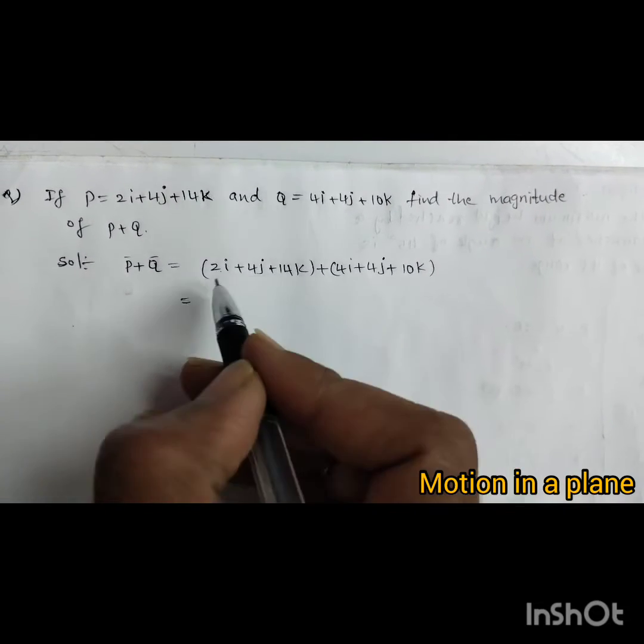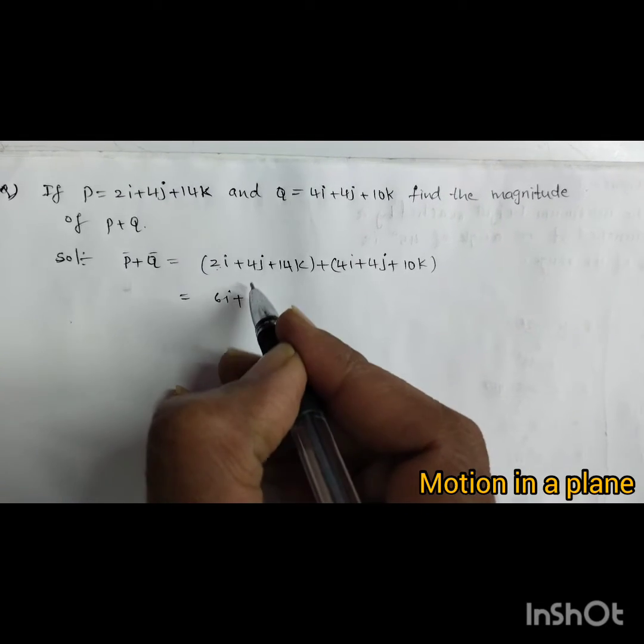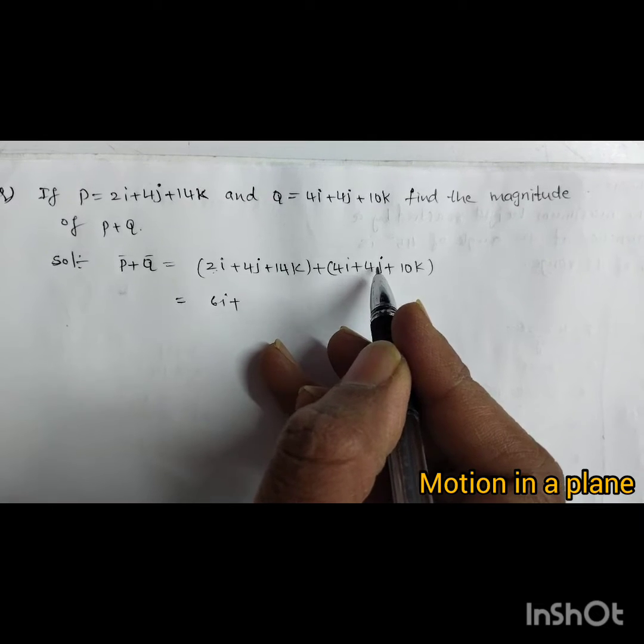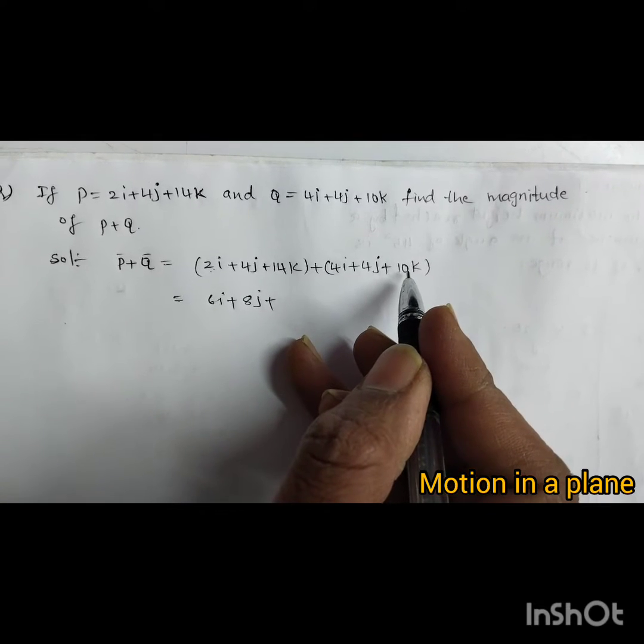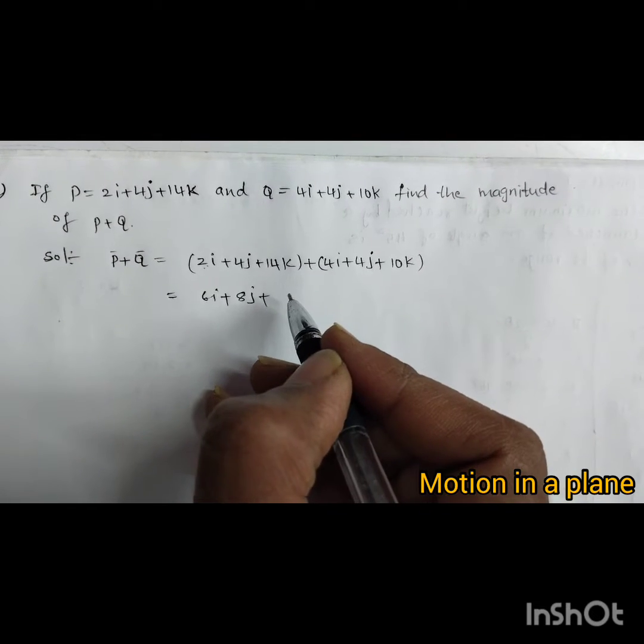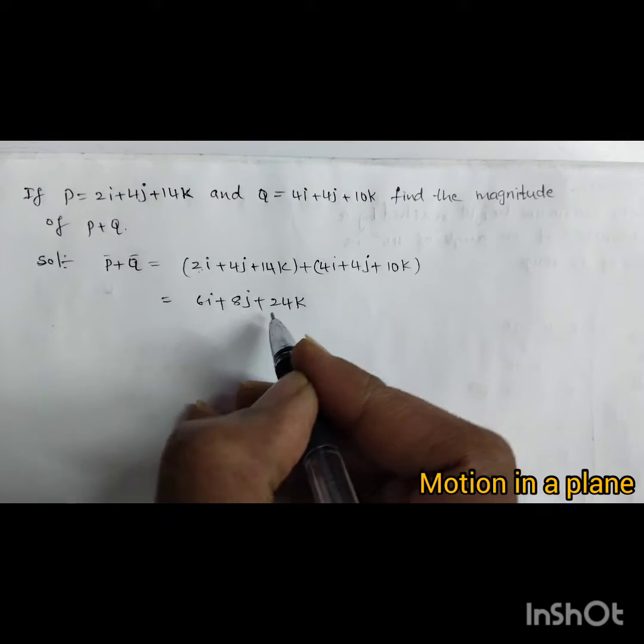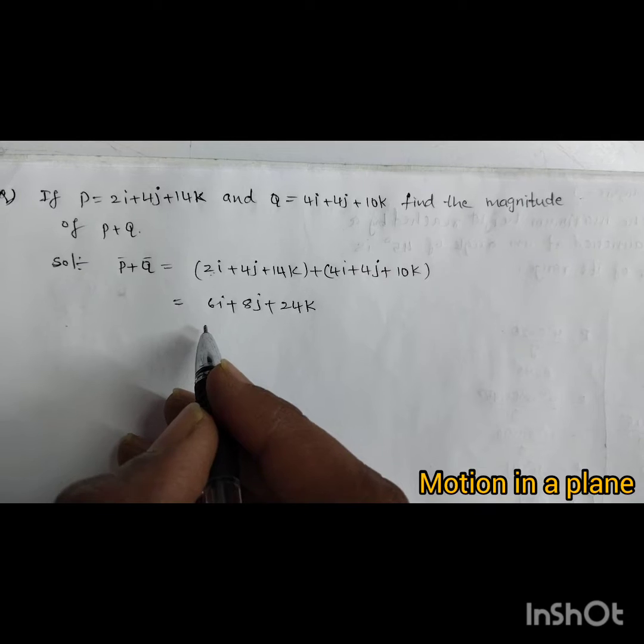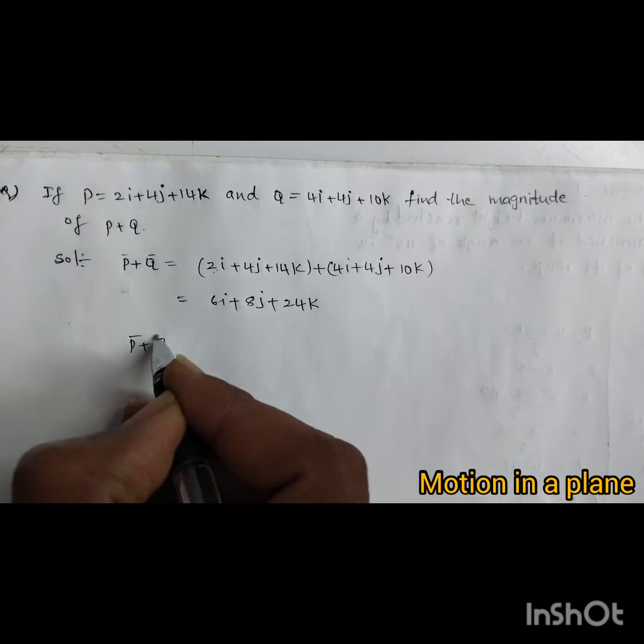Adding i, j, k components: 2i plus 4i equals 6i, 4j plus 4j equals 8j, plus 14k plus 10k equals 24k. So this is the addition of two vectors, but we need the magnitude of p plus q.